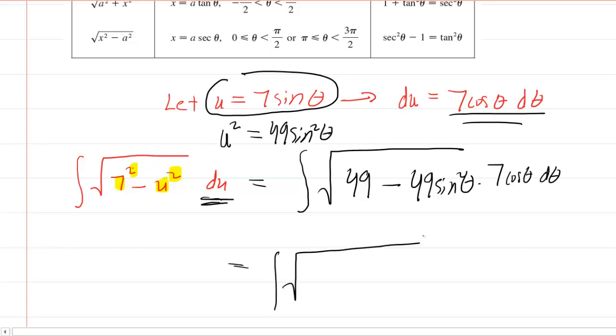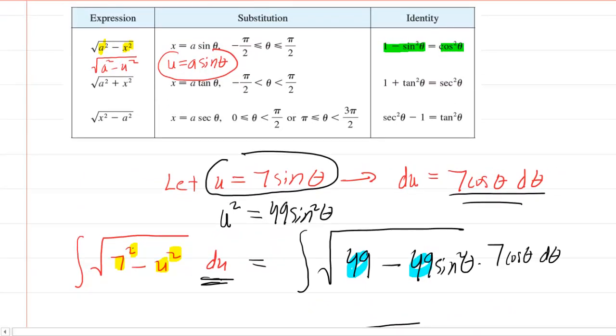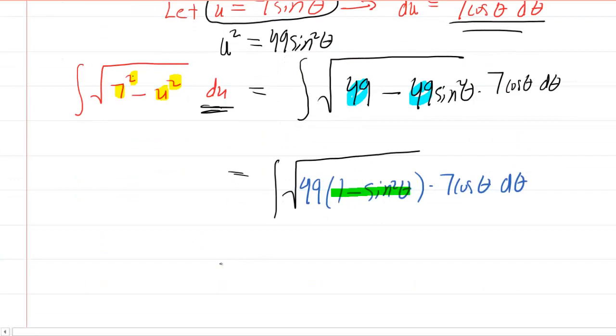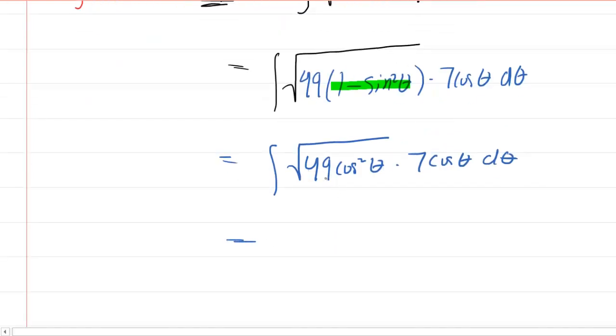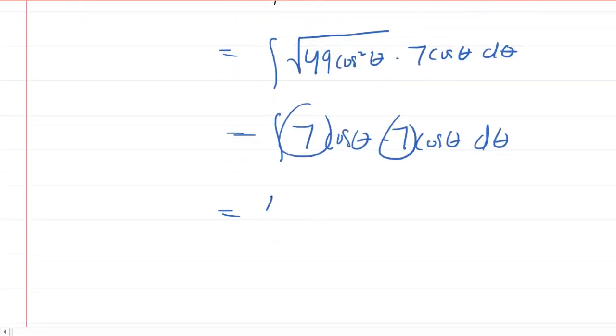Continuing to simplify, we notice underneath the square root we have a common factor of 49. Factor it out to get 49 times 1 minus sine squared theta underneath the radical, and outside we have 7 cos theta d theta. Referencing our chart, 1 minus sine squared equals cosine squared. So this 1 minus sine squared will be substituted with cosine squared—a trig identity from pre-calculus. Continue to simplify: the square root of 49 cos squared. The square root of 49 is 7, and the square root of cos squared is cosine. So now we have the integral of 7 cos theta times 7 cos theta d theta. Seven times 7 is 49—factor it out. Cos theta times cos theta is cosine squared theta d theta.